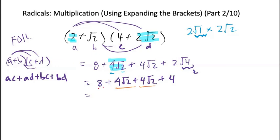And these are like terms. So red goes with red. So 8 and 4 would be 12, and then 4 root 2 plus 4 root 2 would be 8 root 2.